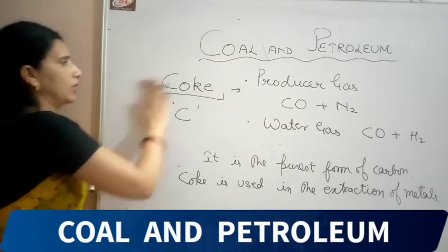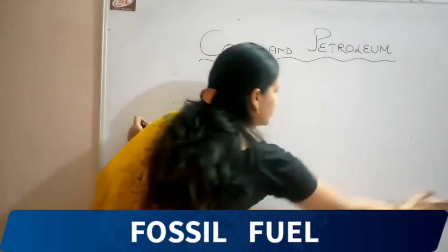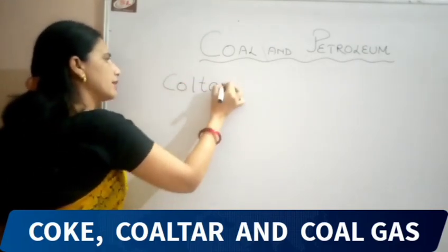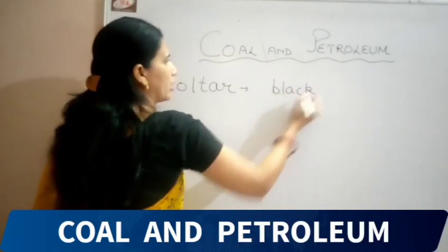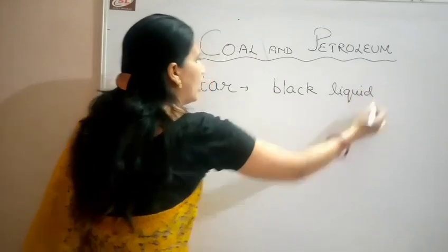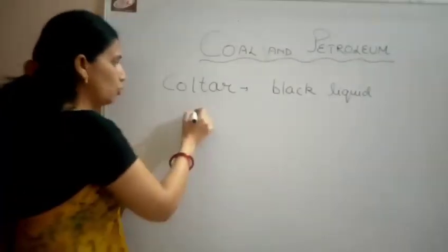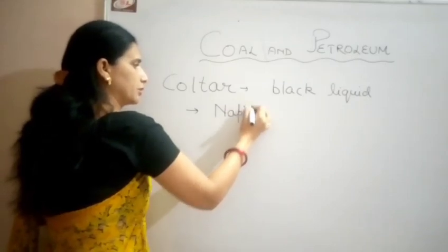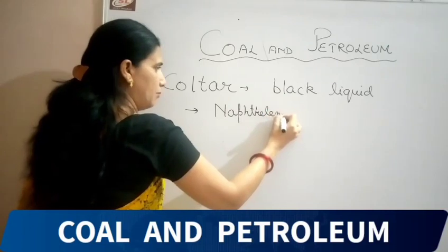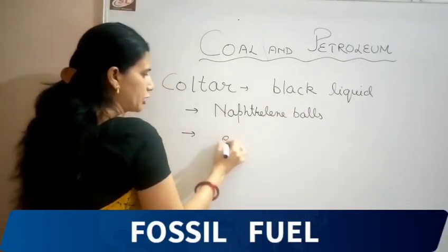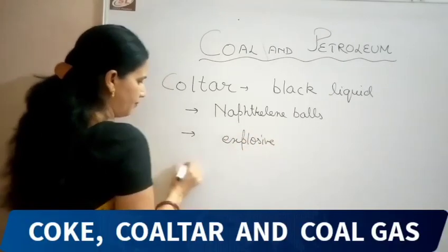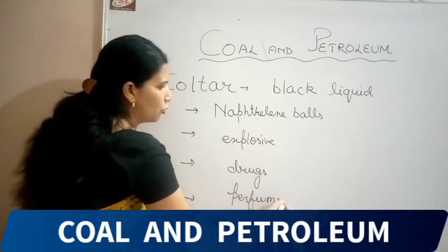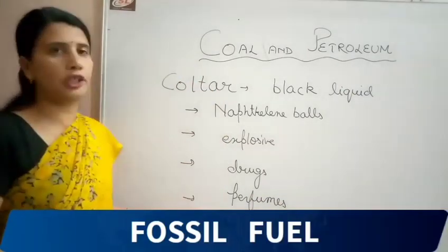The second product is coal tar. Coal tar is a black liquid produced by the destructive distillation of coal, and it has a number of uses. Coal tar is used in the preparation of naphthalene balls, explosives, drugs, and perfumes.